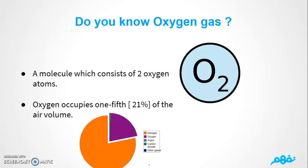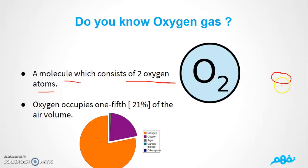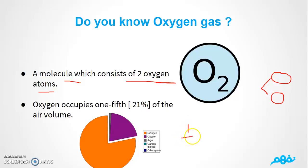Now we're going to talk about oxygen gas. You should know that oxygen gas is a molecule which consists of two oxygen atoms — one and two — to make oxygen gas. Oxygen occupies one-fifth, which means 21% of the air volume. So you could write in the exam one-fifth or 21% to represent the percentage of oxygen.